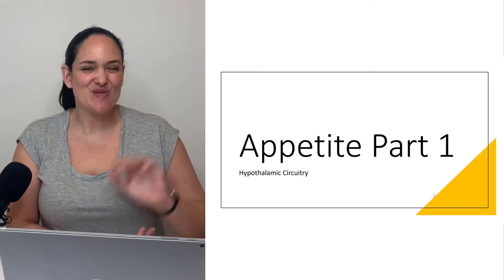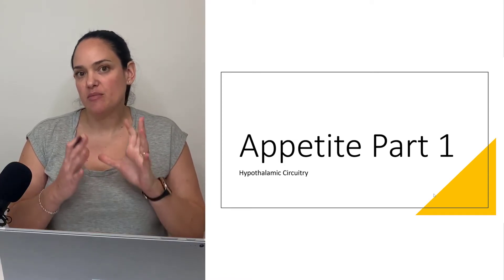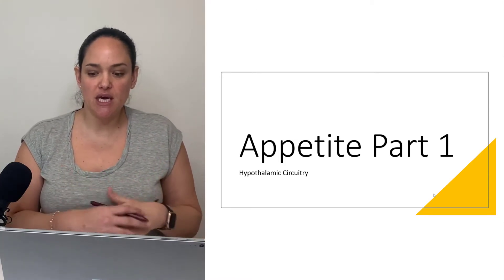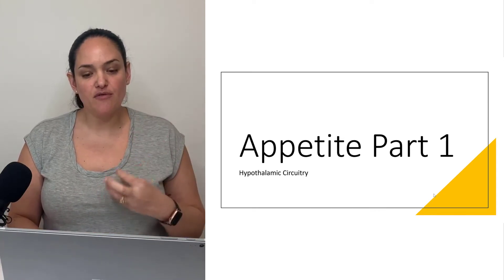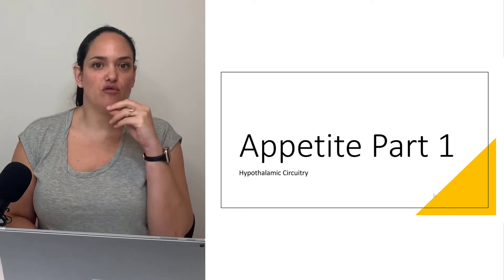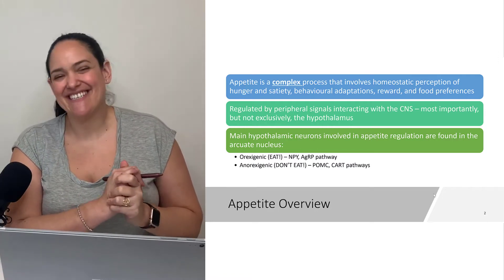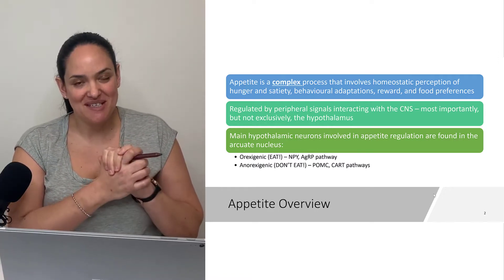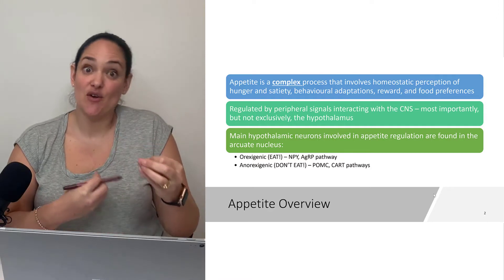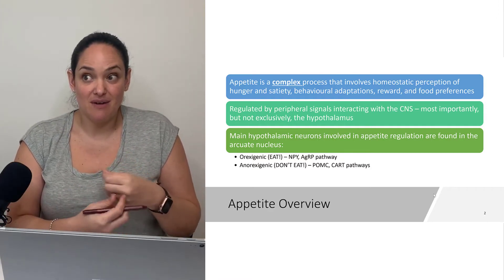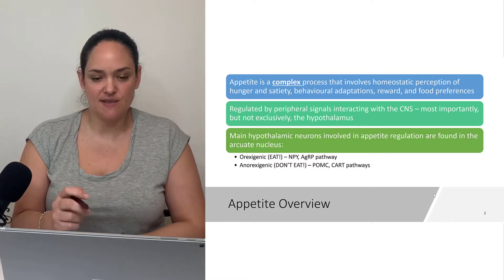We are now entering my favorite part of this course, which is the unit on appetite and appetite regulation. Before we get into some of the more nitty-gritty on how appetite is regulated both centrally and peripherally, there are some basics we need to go over and some terms I need to define. Like most processes in the body, appetite regulation is a complex process with many competing variables affecting whether appetite is promoted or decreased and something called satiety is promoted.